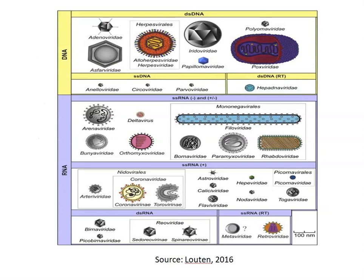In this picture you can see different types of viruses: DNA viruses and RNA viruses. DNA viruses are further divided into two types: single-stranded DNA viruses and double-stranded DNA viruses. Similarly, in the case of RNA viruses, there are single-stranded RNA viruses and double-stranded RNA viruses. Single-stranded RNA viruses are further divided into two types: single-stranded RNA negative and single-stranded RNA positive.